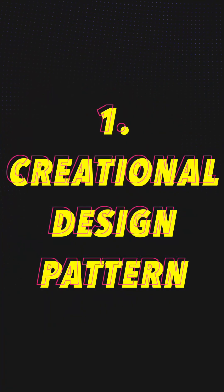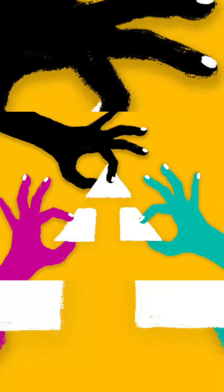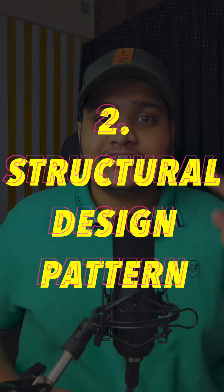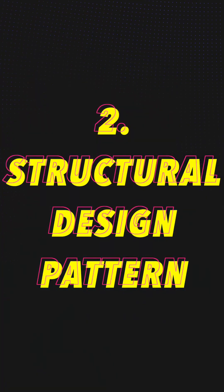There are three types of design patterns that you should know in software engineering. First is creational design patterns. This defines how your objects and classes are created. So whenever we are working with multiple classes in our applications, this will define how our classes and objects are created. This type of design pattern includes many well-known design patterns such as singleton, prototype, factory, builder, etc.